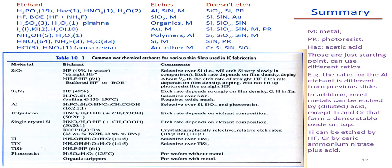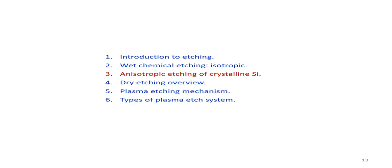This summary slide shows the different types of etchants, what they etch, and what they do not etch. For example, to etch a polymer, a combination of NH4OH and H2O2 is used, which does not etch silicon, silicon oxide, or silicon nitride. The table lists solution combinations, the materials they etch, and the materials they do not etch — including abbreviations such as M for metals and PR for photoresist.